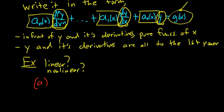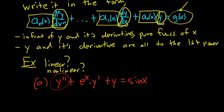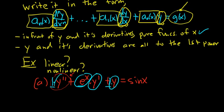Example A: y'' + e^x · y' + y = sin(x). The order is 2 because the order is the order of the highest derivative. In front of y'' we have 1, in front of y' we have e^x, in front of y we have 1 — all pure functions of x. And Y and all its derivatives are to the first power. So the answer is linear.